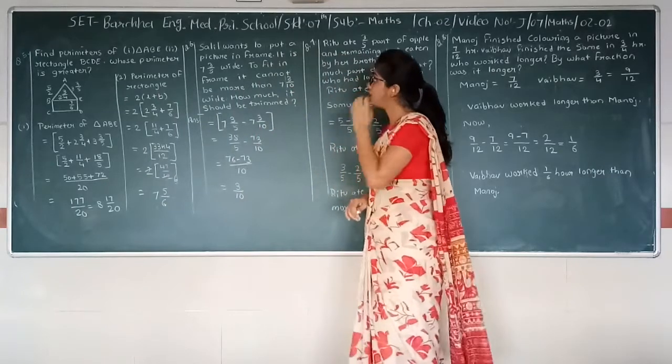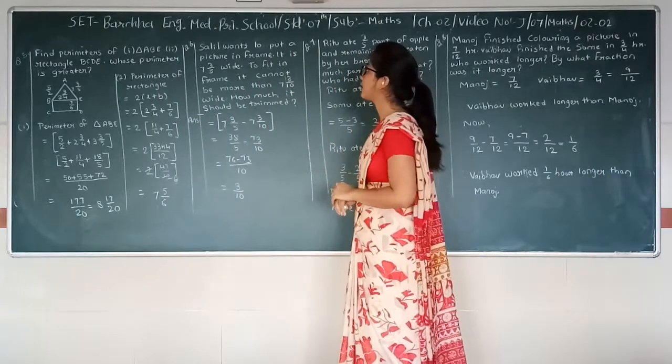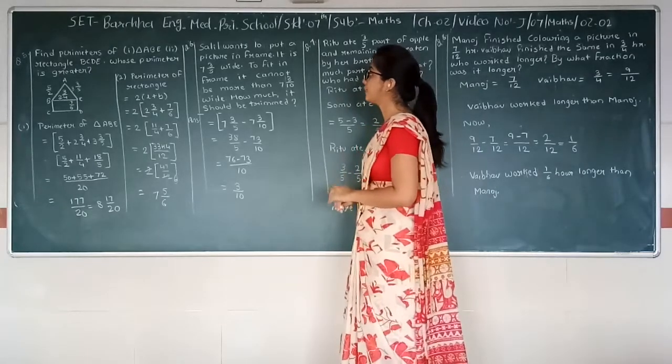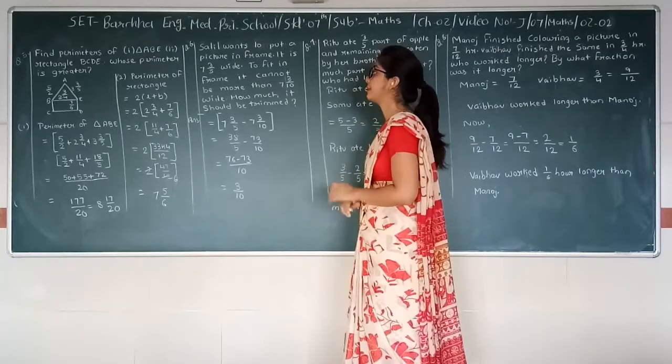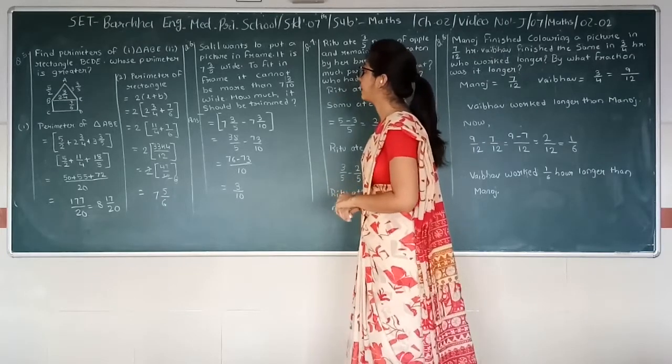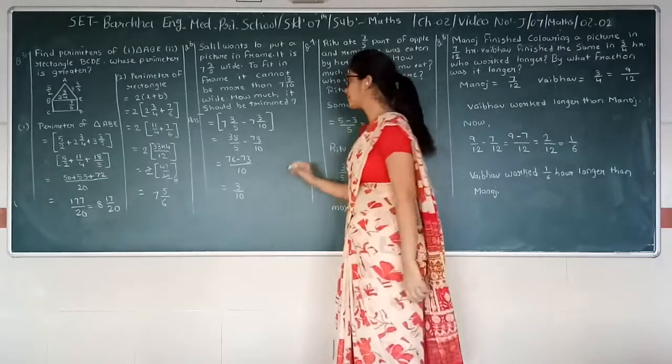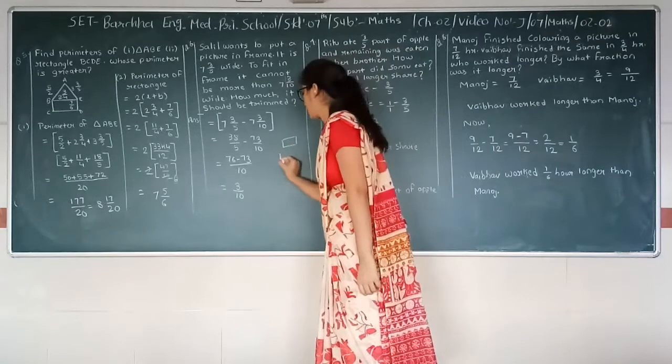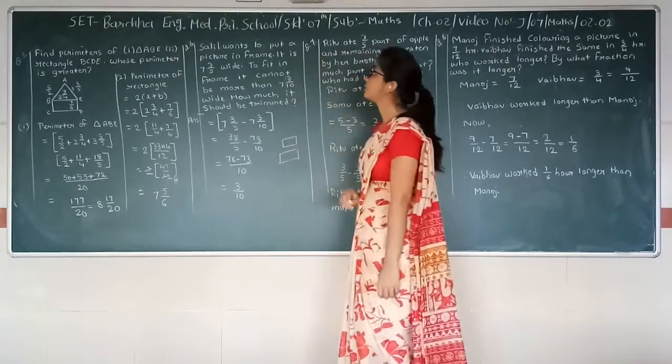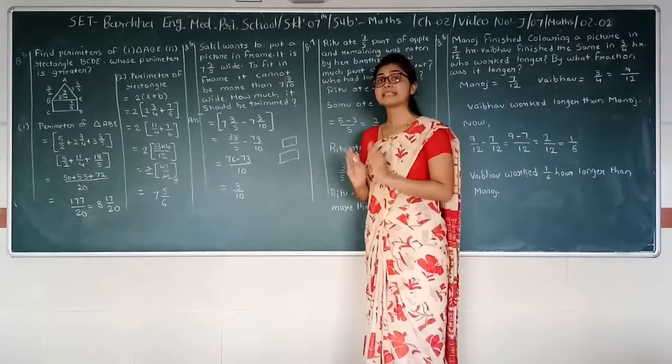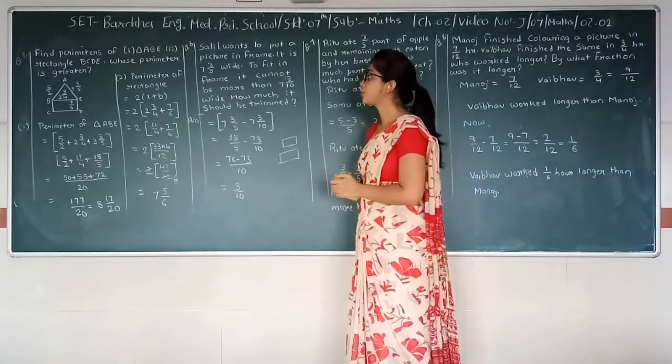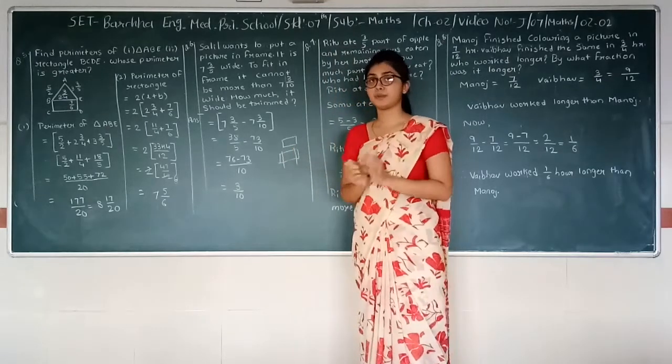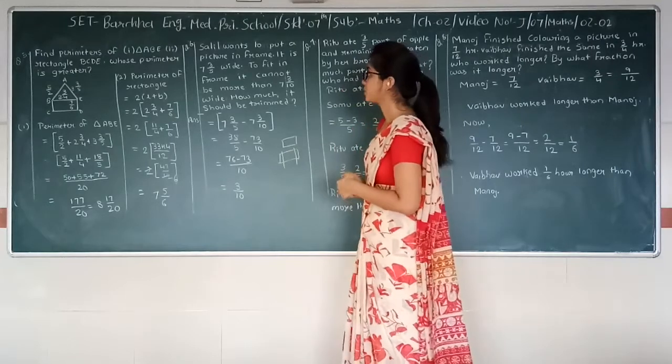Next question. Sahi wants to put a picture in frame. It is 7 integer 3 upon 5 cm. To fit in frame it cannot be more than 7 integer 3 upon 10 cm. So what we have to do is we have to cut the size. It means we have to trim it. We have to make it smaller.